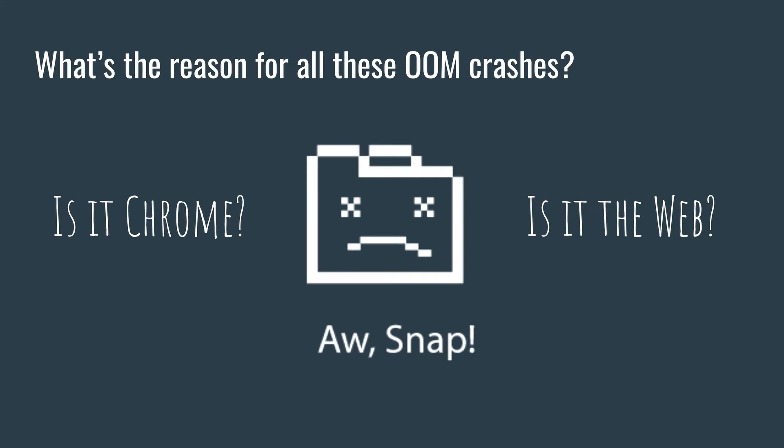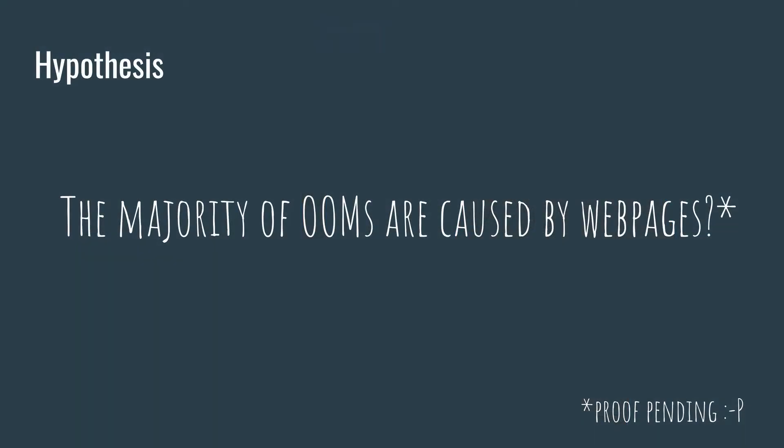What's the reason why Chrome crashes out of memory? Is it Chrome? Sometimes there's bad press that Chrome is a memory hog. Is it the web? It's pretty hard to figure out what's the main reason. The answer is probably somewhere in between. But each talk should have a controversial hypothesis, so let's state one: the majority of the OOMs are caused by web pages. We may see if this holds or not — in general this is really hard to prove, and we don't have proof for that. So this is why we call it a hypothesis.